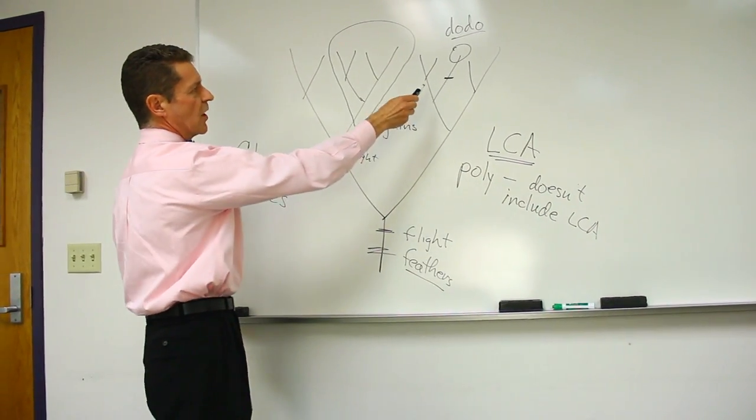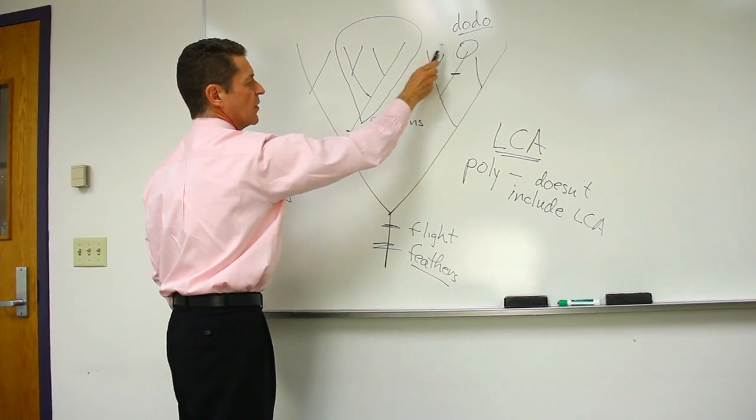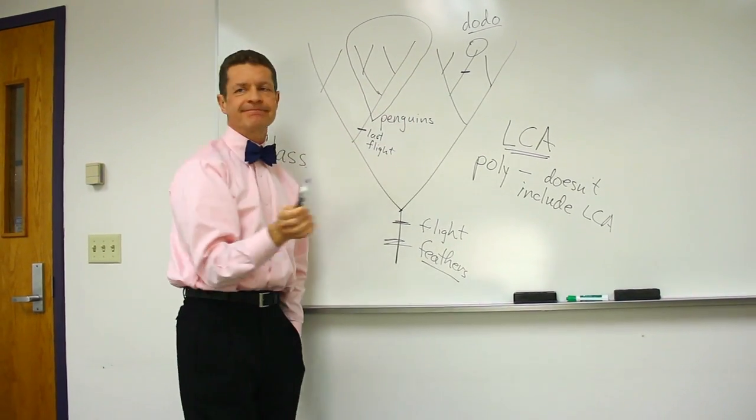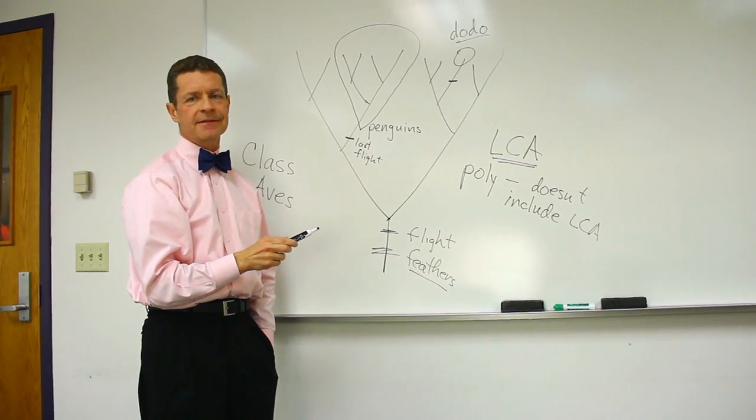Because as I've drawn it, the last common ancestor of dodo and penguin is way down here. So the group putting them together doesn't include the last common ancestor, poly.